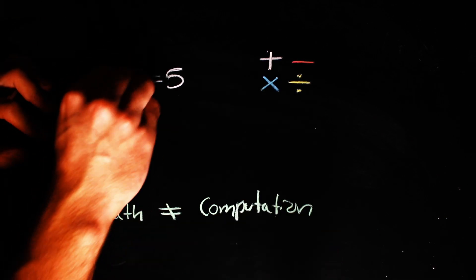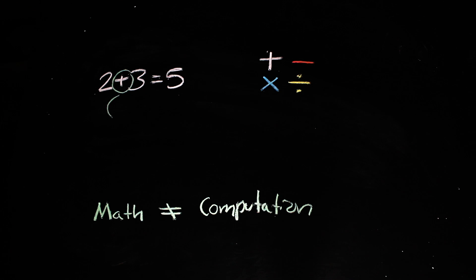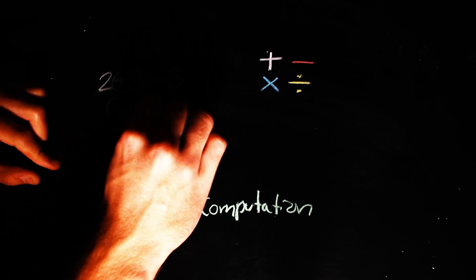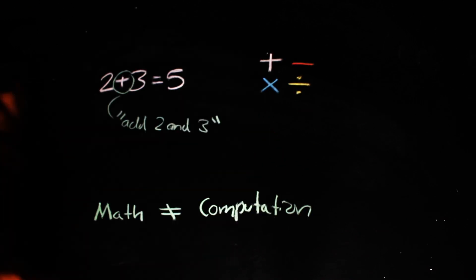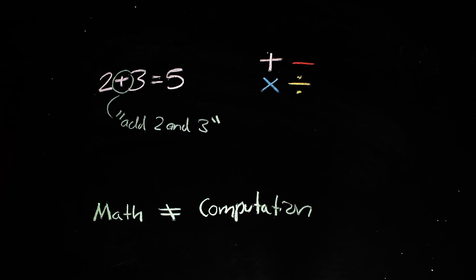For one, computation is a well-defined model of steps that generate a solution. Just as 2 plus 3 is a computation because the plus sign tells us what to do with the 2 and the 3 to get the solution 5,